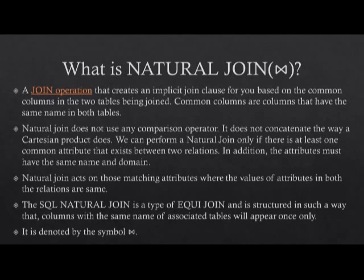It is structured in such a way that columns with the same name of associated tables will appear once only. It's almost the same as an inner join, but there's quite a bit of difference in the result. When you do an inner join with two columns of the same name from two separate tables, you will see two columns of the same name. However, if you use natural join, the common columns would only appear once. Natural join is actually denoted by the symbol infinity.